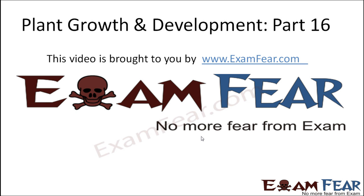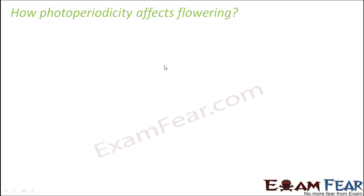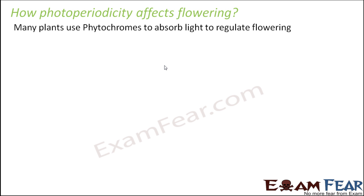This video on plant growth and development is brought to you by ExamFear.com. We will now see how the process of photoperiodicity takes place — what is inside different plants that causes them to flower in different seasons. There are a set of complexes present inside many plants which are responsible for this phenomenon, and these are called phytochromes. 'Phyto' means plant, 'chromes' means a chemical substance.